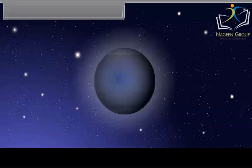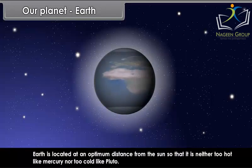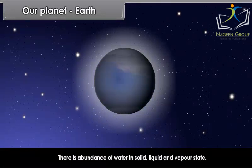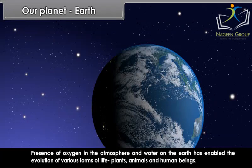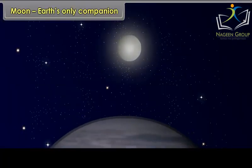Earth is located at an optimum distance from the Sun, so that it is neither too hot like Mercury nor too cold like Pluto. Extremes of temperature between day and night are reduced because of the presence of the atmosphere. There is abundance of water in solid, liquid and vapour state. Presence of oxygen in the atmosphere and water on the Earth has enabled the evolution of various forms of life — plants, animals and human beings. Owing to the abundance of water, the planet appears blue from space, and hence Earth got the name Blue Planet.